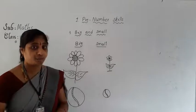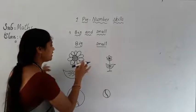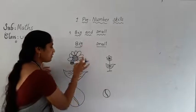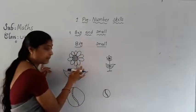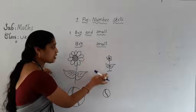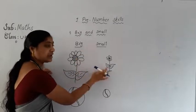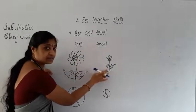Today's topic is also big and small. Look at here, this flower is big and this flower is small. Means this one is the big, this one is the small.